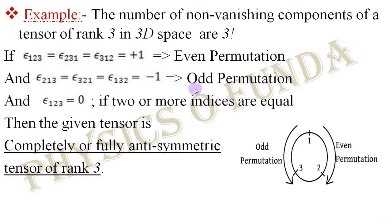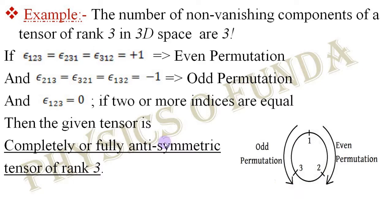Now, what is even permutation and odd permutation? Looking at these components carefully, we can understand this with the help of a diagram. We write 1, 2, 3 on the periphery of a circle. Even permutation means clockwise rotation of the indices — starting with 1, 2, 3, a clockwise shuffle gives 2, 3, 1, and then 3, 1, 2. All these are even permutations of the indices.